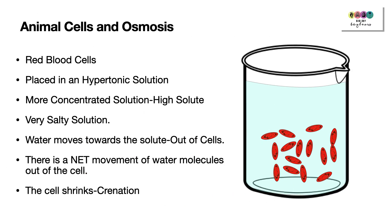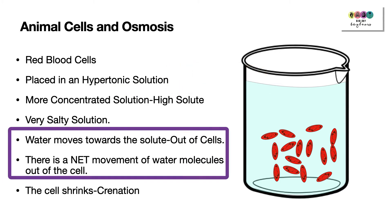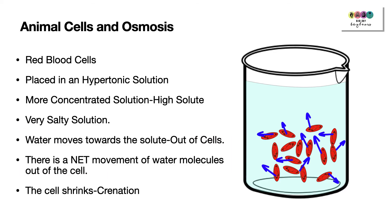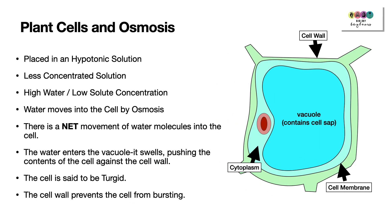What if you place red blood cells into a hypertonic solution — very concentrated, very salty water? Water will move from where there's lots of it, inside the cell cytoplasm, to where there's less — towards the salty solution. There will be a net movement of water out of the cell. The cells will shrivel, get creases on their surface, and this is known as crenation.